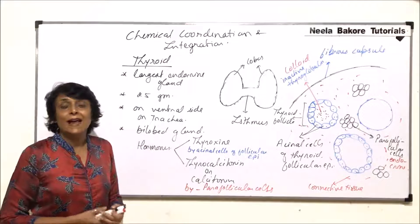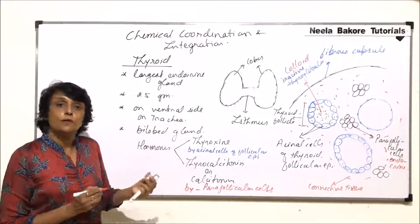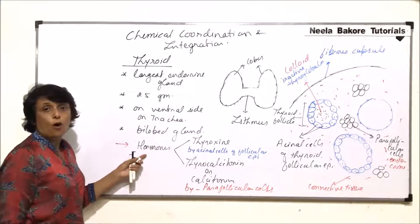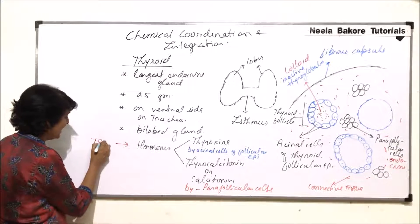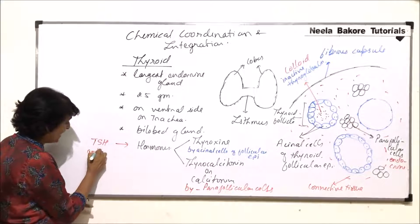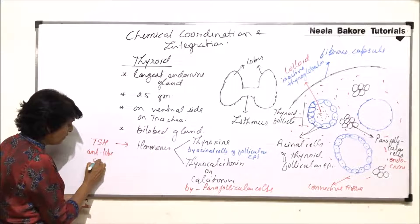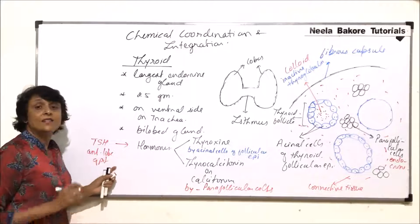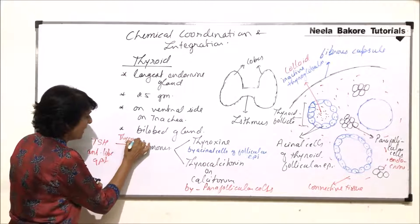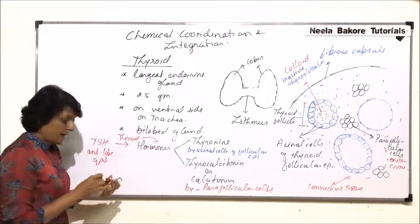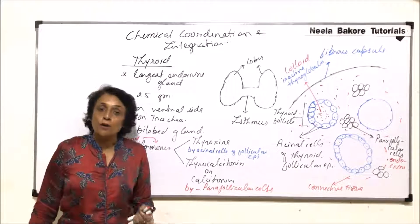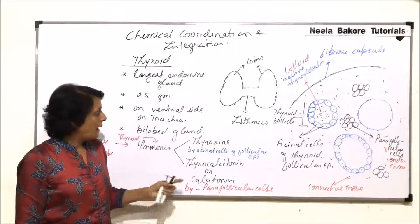The thyroid gland is under the influence of TSH. Stimulation of the thyroid is by TSH, which comes from the anterior lobe of the pituitary. It stimulates the thyroid gland, and the thyroid then releases its hormones depending upon which hormone is required.